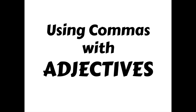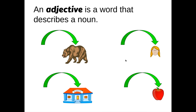Today, we're going to talk about using commas with adjectives. An adjective is a word that describes a noun. It tells which one, what kind, or how many. So for instance, if we have this bear here, think of some adjectives you would use to describe that bear. You might say big or brown or ferocious. Those are all adjectives.